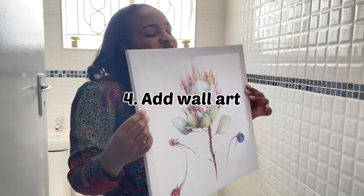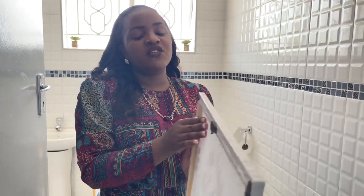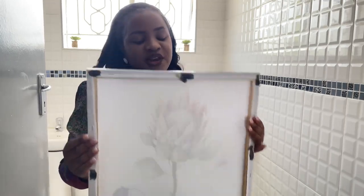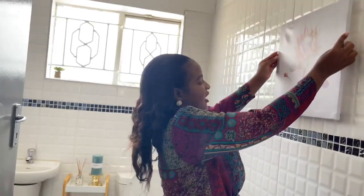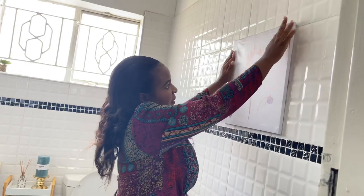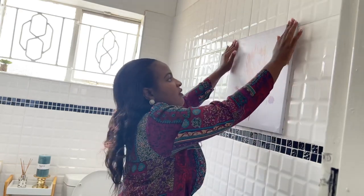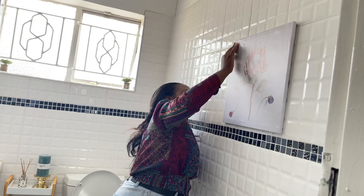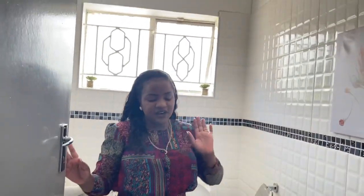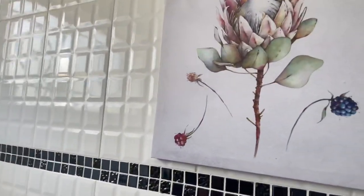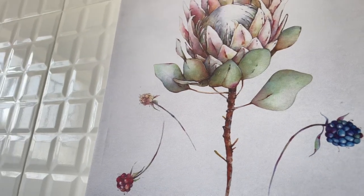The next tip is to add wall art — this can be anything you want to put on your walls. I just added double-sided tape to the back of mine since this is a rental-friendly upgrade. The wall art is very light, so I just placed it on the wall. You can add more art; I love to put lots of art in my bathroom.